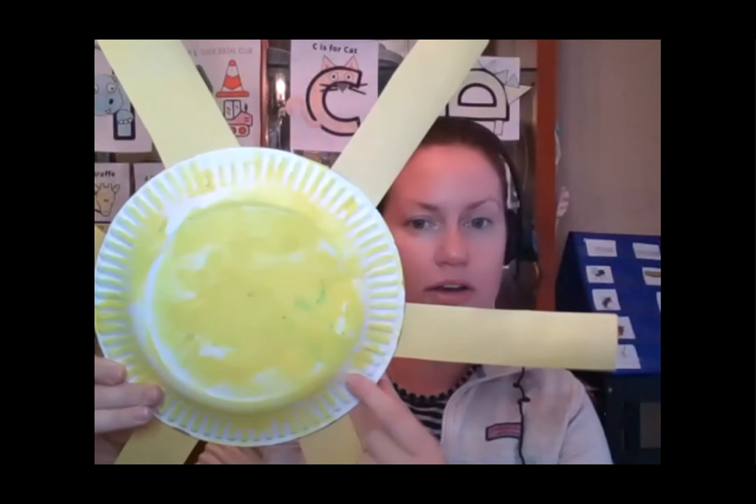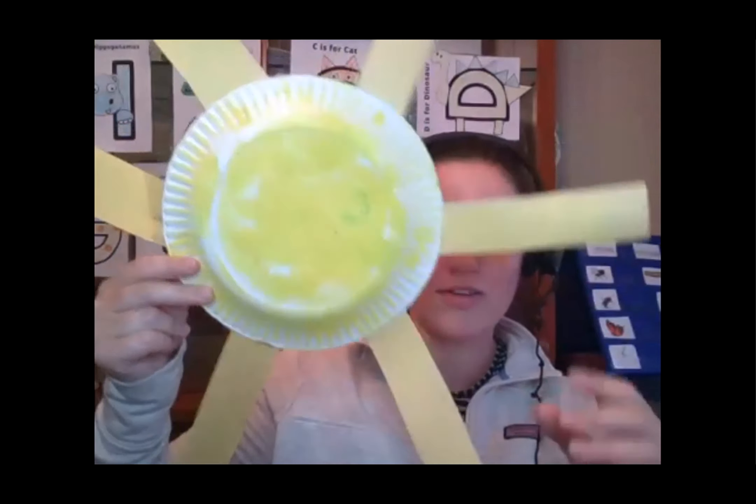Then I used some yellow construction paper, or you could use white and paint it or color it. I attached it to look like the rays of the sun. There you go. Here is our sunshine.